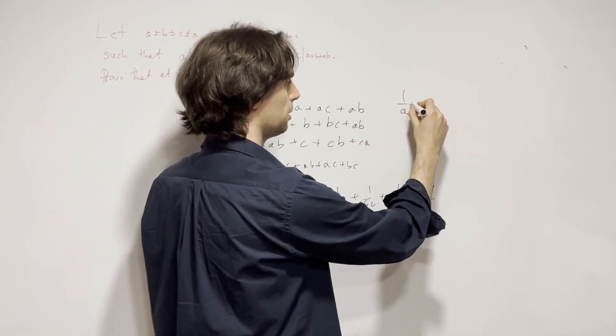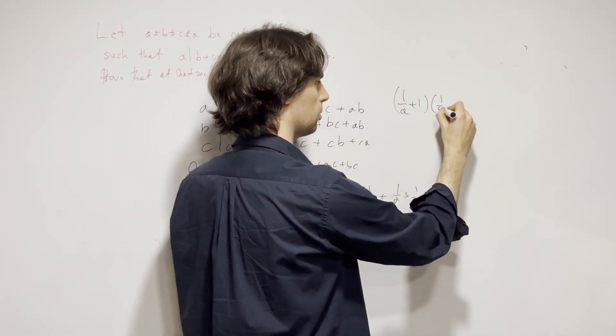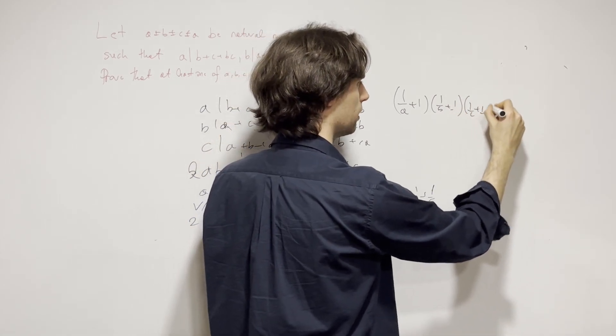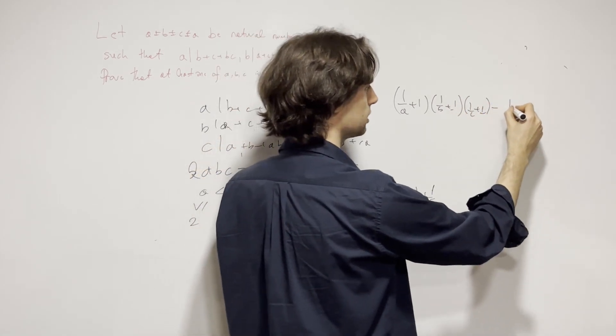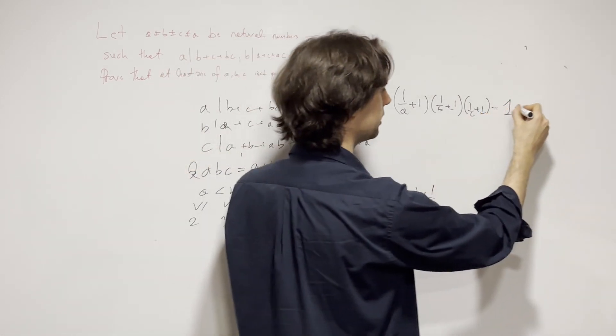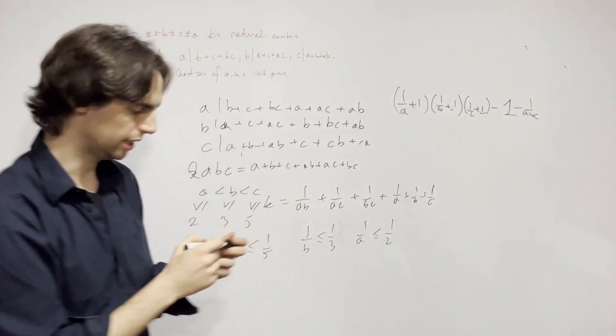I can write this as 1 over A plus 1, 1 over B plus 1, times 1 over C plus 1, and then minus 1, and then minus 1 over ABC. That's how I can factor this out.